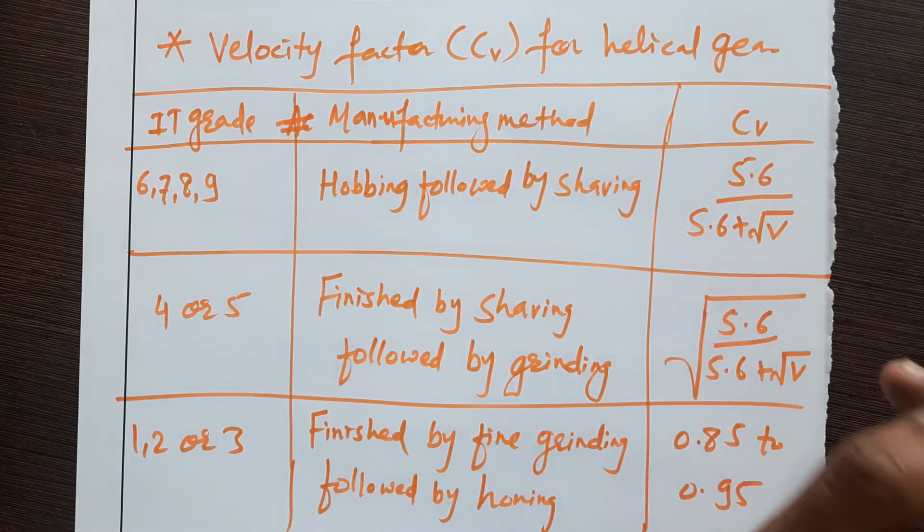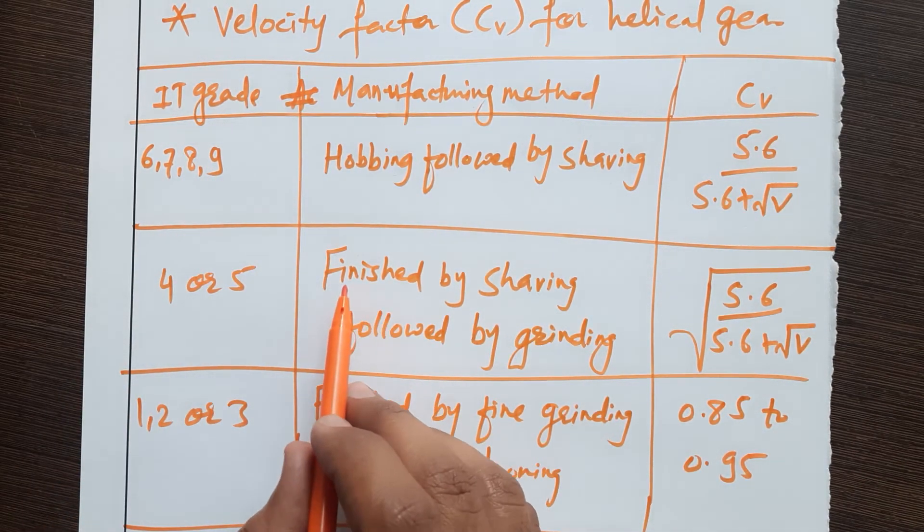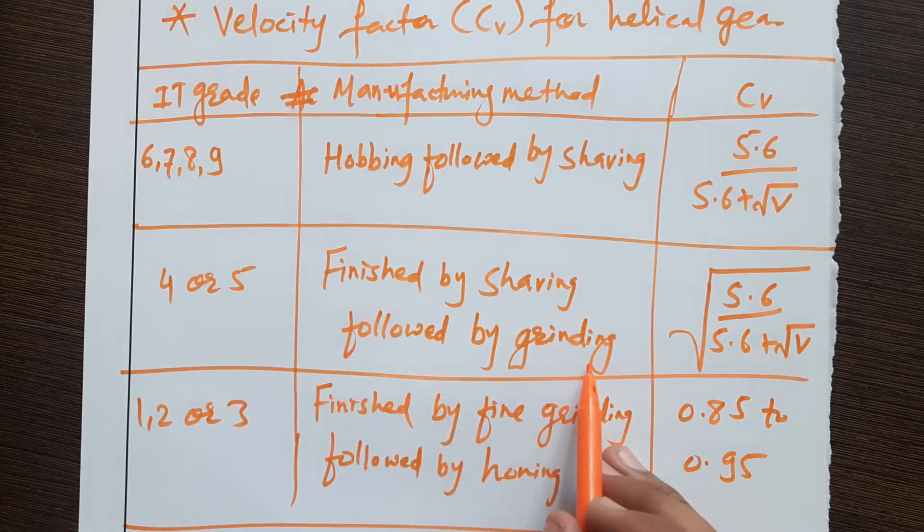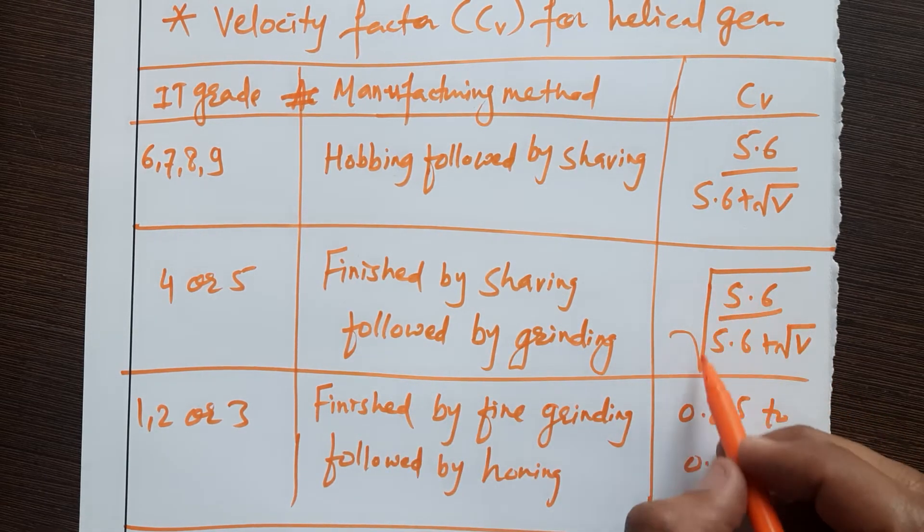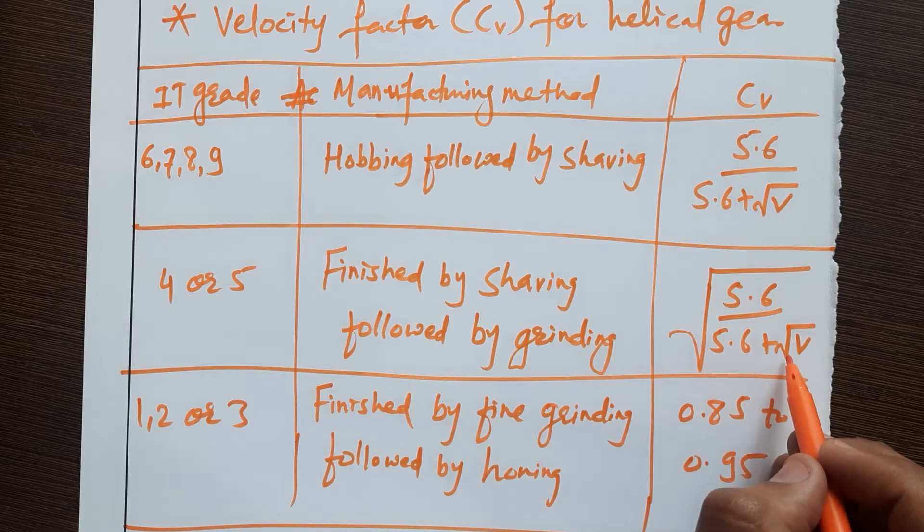.6 divided by 5.6 plus under root V. If your IT grade is 4 or 5, or the manufacturing method is finished by shaving followed by grinding, in that case your velocity vector CV equals under root 5.6 divided by 5.6 plus under root V.